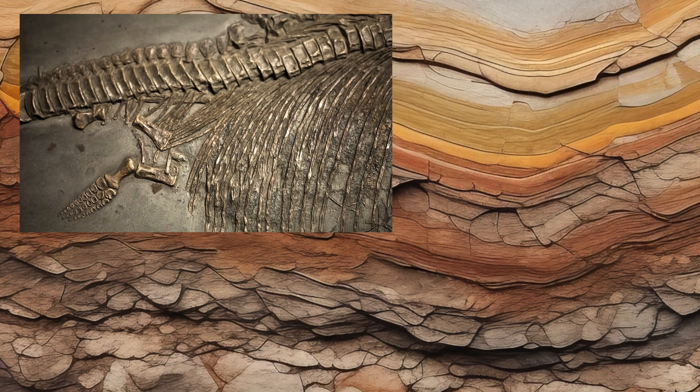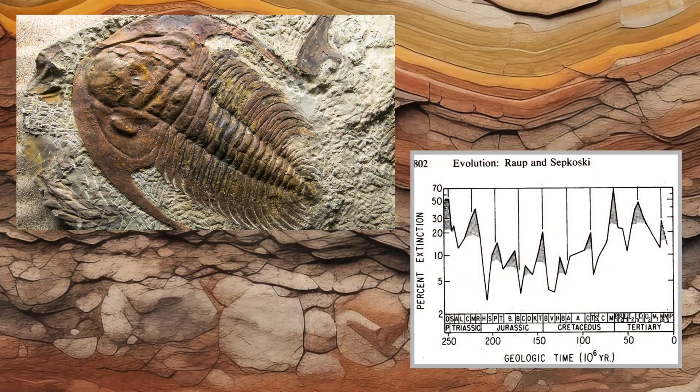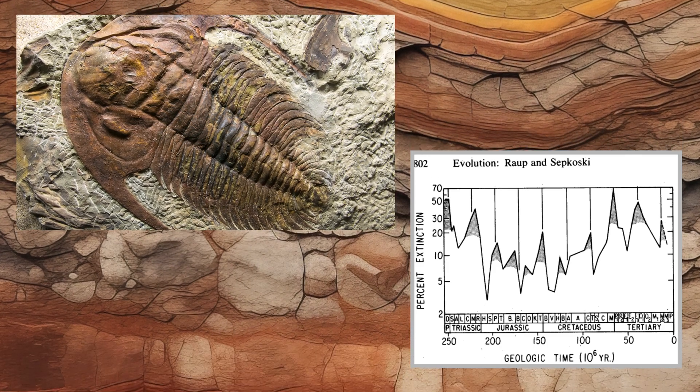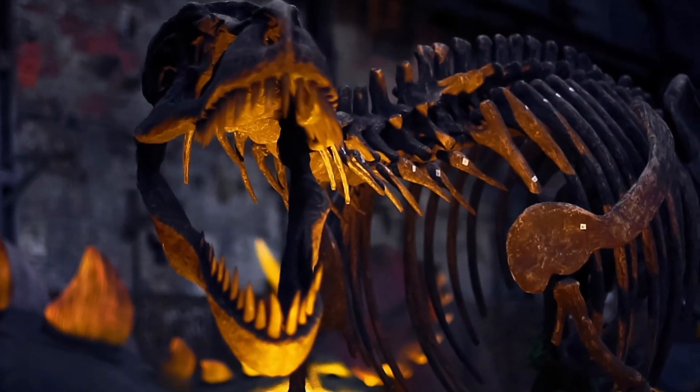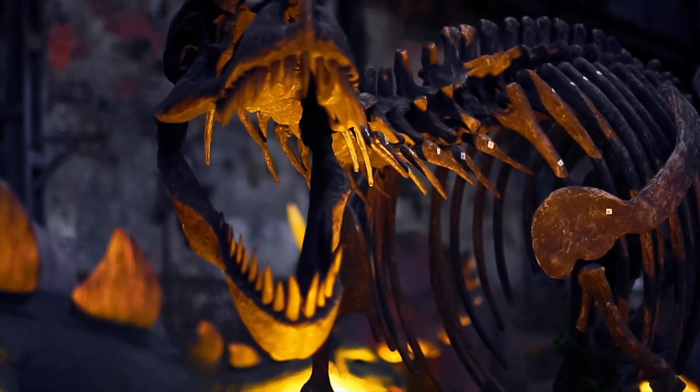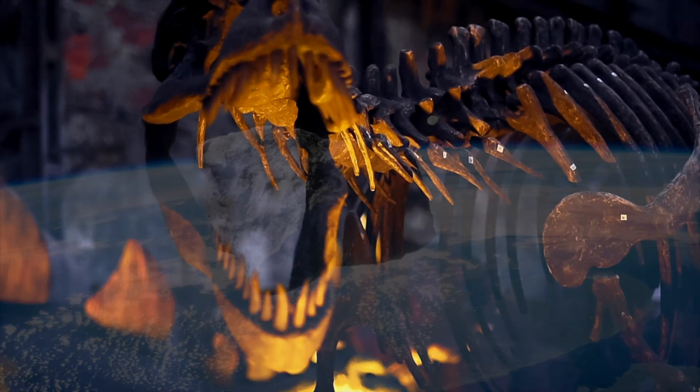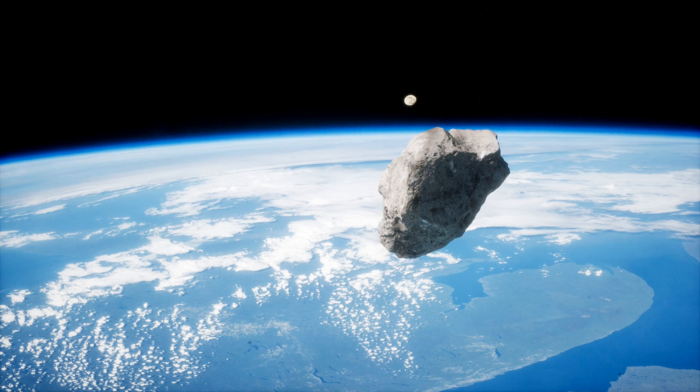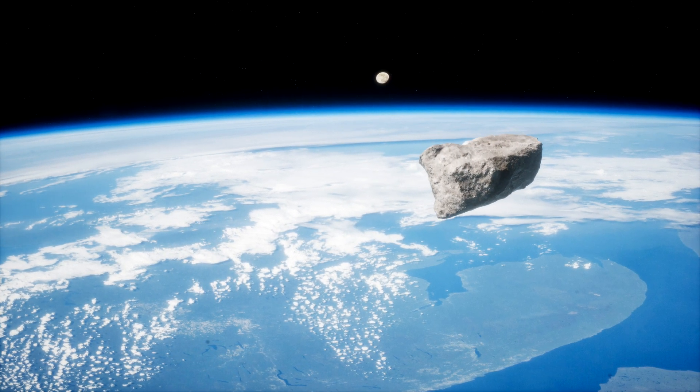Every 26 million years or so, a major extinction seemed to occur. Not just random chaotic events, but something disturbingly regular. Some of these events, like the one that ended the reign of the dinosaurs, were already linked to massive impacts. But Raup and Sepkoski took it a step further, by uncovering a broader cycle so regular it hinted at something far beyond Earth.